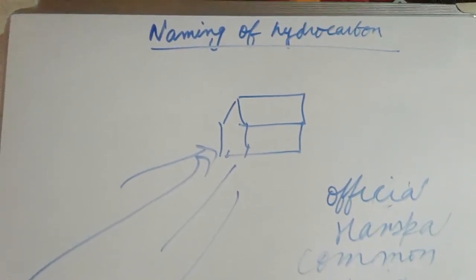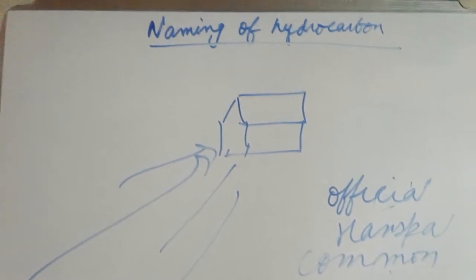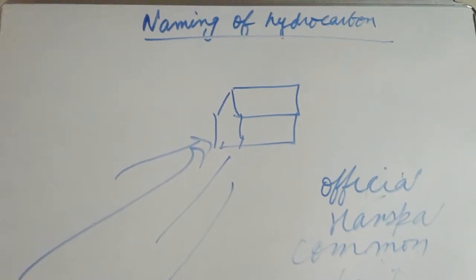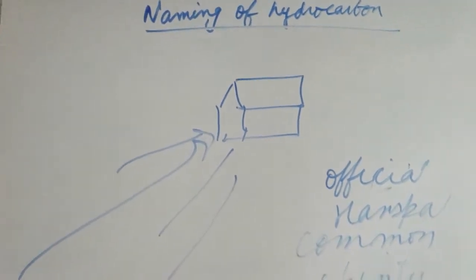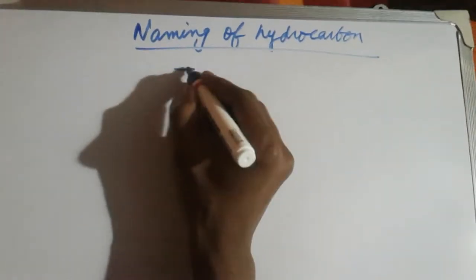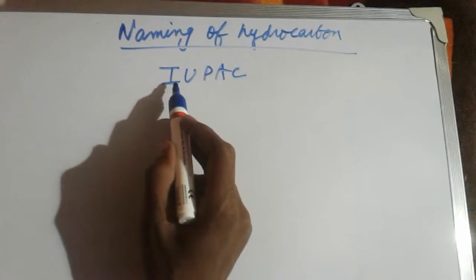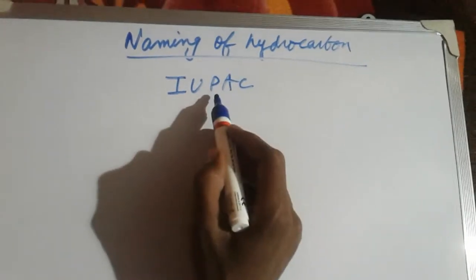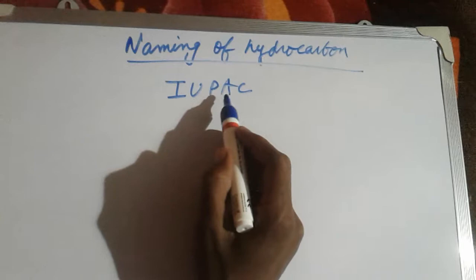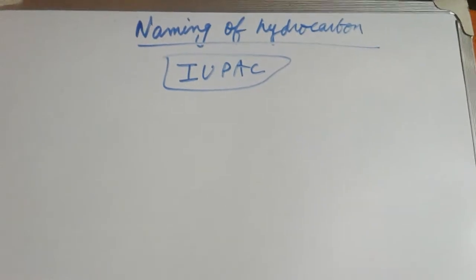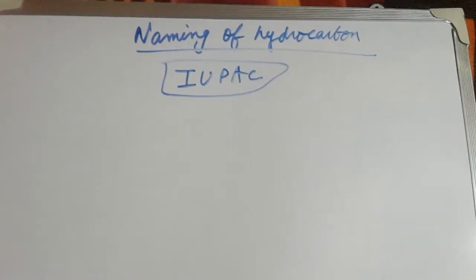Today we will learn about IUPAC and common names for hydrocarbons. Naming of hydrocarbons is given by the IUPAC system: International Union of Pure and Applied Chemistry. The official names are given by the IUPAC system. Now I will show you how the names are given.